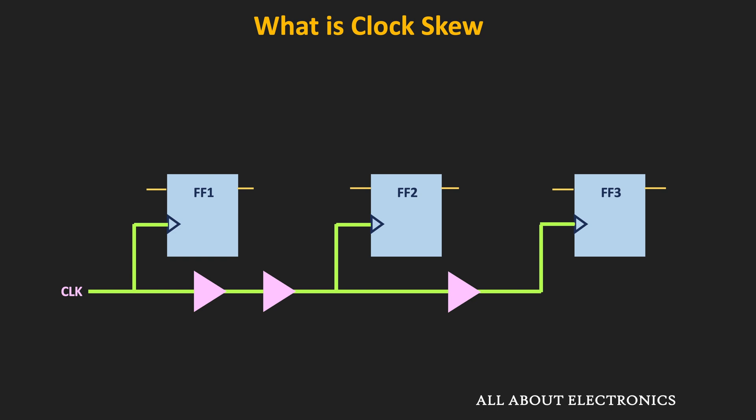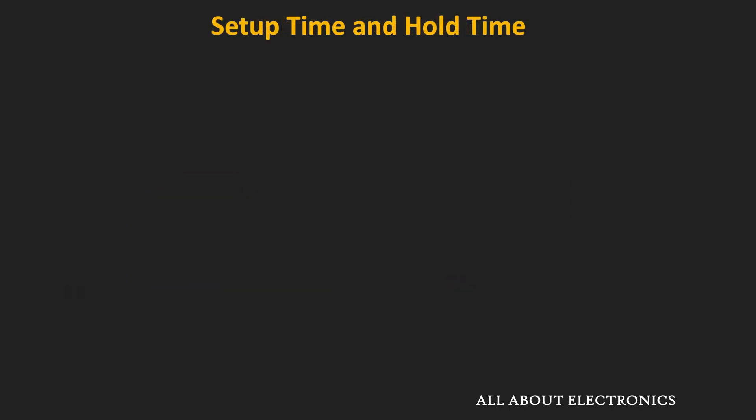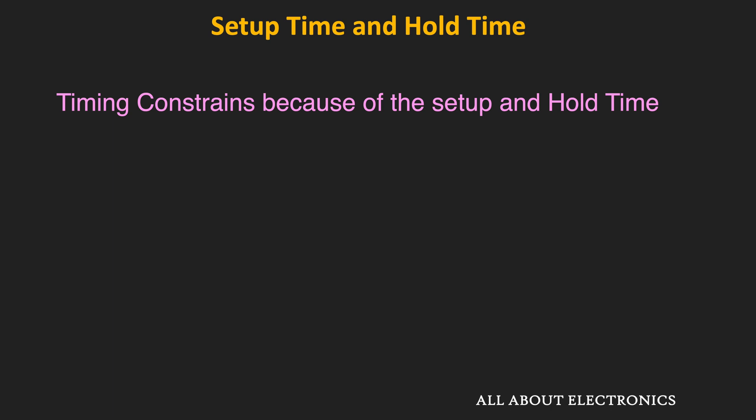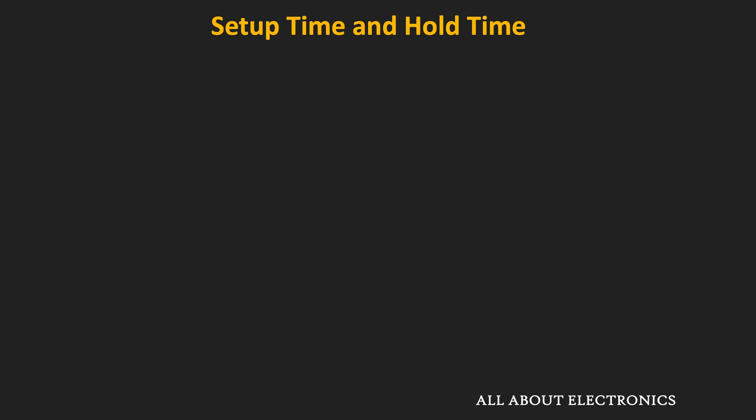Let us understand the timing constraints imposed by clock skew and see how it can affect the performance of synchronous digital circuits. In an earlier video, we already covered setup time and hold time in the context of flip-flops, and the timing constraints they impose. During that discussion, we assumed there was no clock skew. But when we also consider clock skew, the timing analysis becomes more complicated.